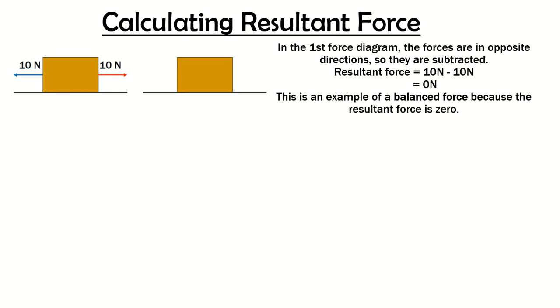So to calculate resultant force, in the first force diagram, the forces are in opposite directions, so they must be subtracted. Resultant force is 10 newtons minus 10 newtons, so overall the resultant force is zero newtons. This is an example of a balanced force because resultant force is zero. So the object, the cardboard box, would not be moving. There is no overall force on the cardboard box.